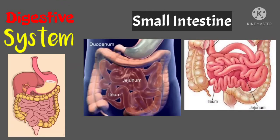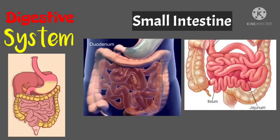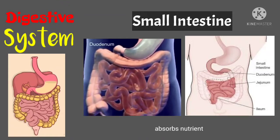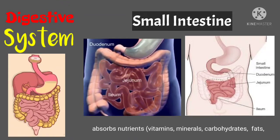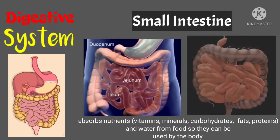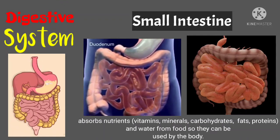Number three is the ileum. The ileum is the last part of the small intestine. It connects to the second part of the large intestine and helps to further digest food coming from the stomach and other parts of the small intestine. In addition, the ileum absorbs nutrients such as vitamins, minerals, carbohydrates, fats, and proteins, as well as water from foods so they can be used by the body.